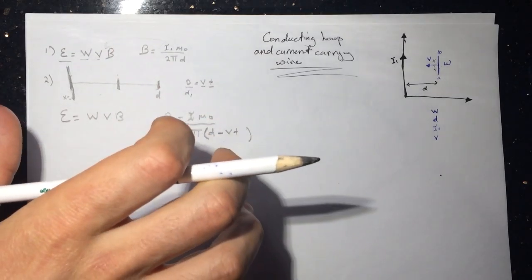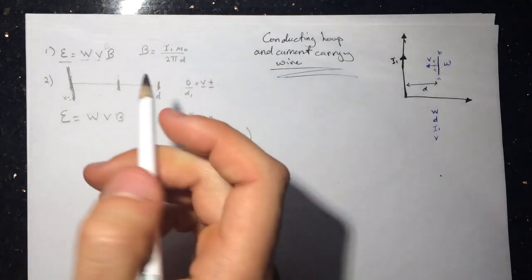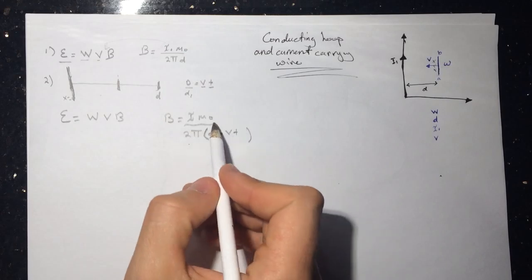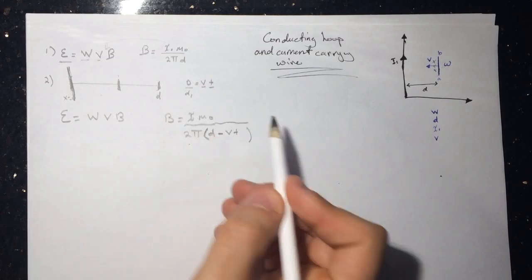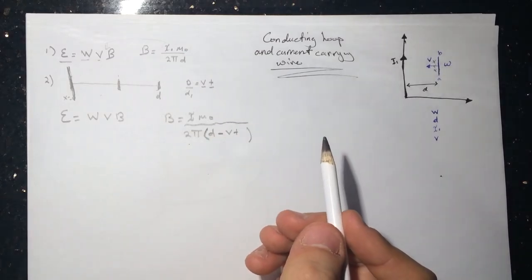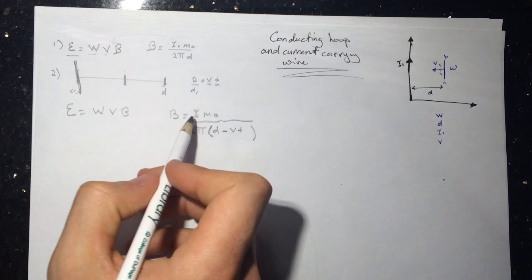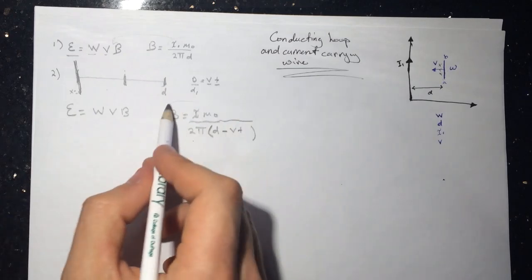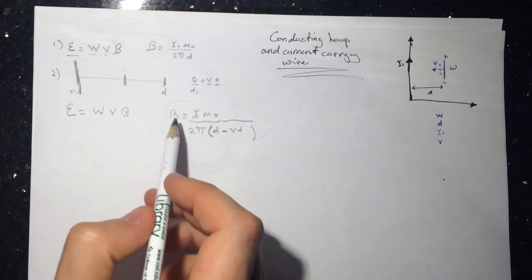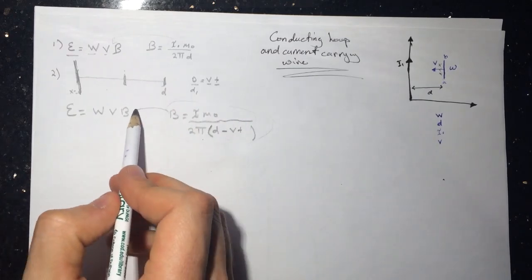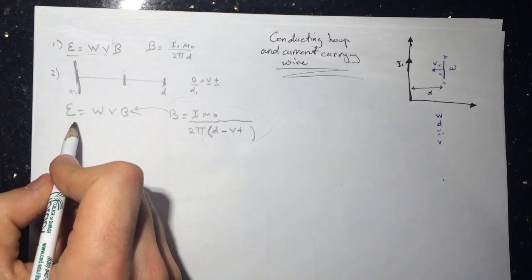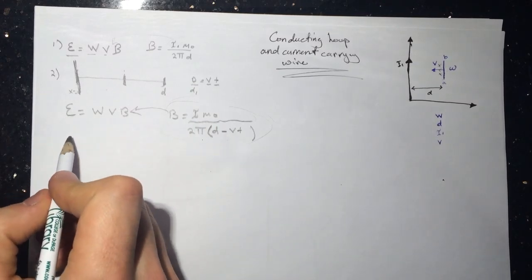The magnetic field is still pointing into the page (X's). Once you get the value of B at that new distance, substitute it into the EMF formula.